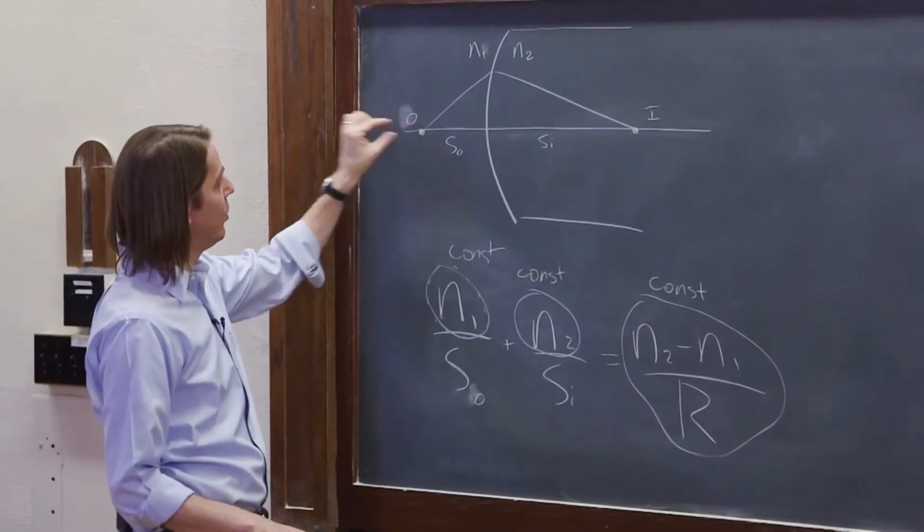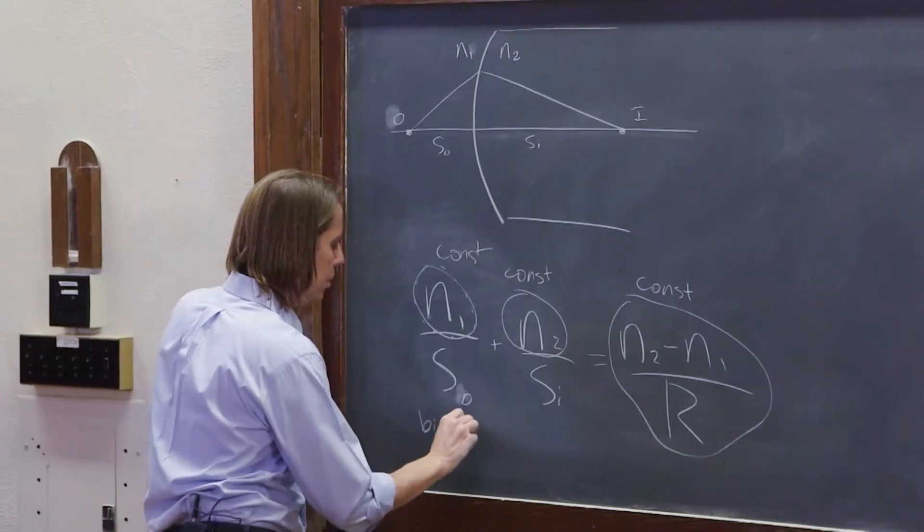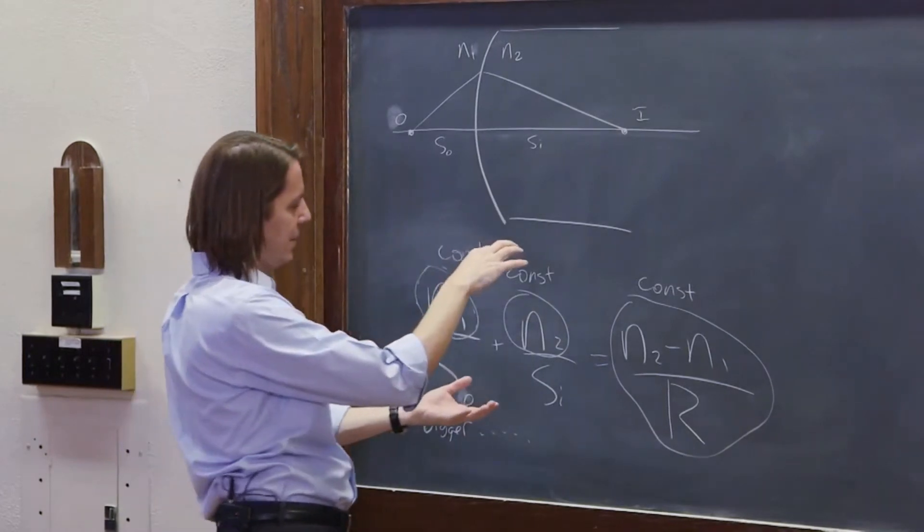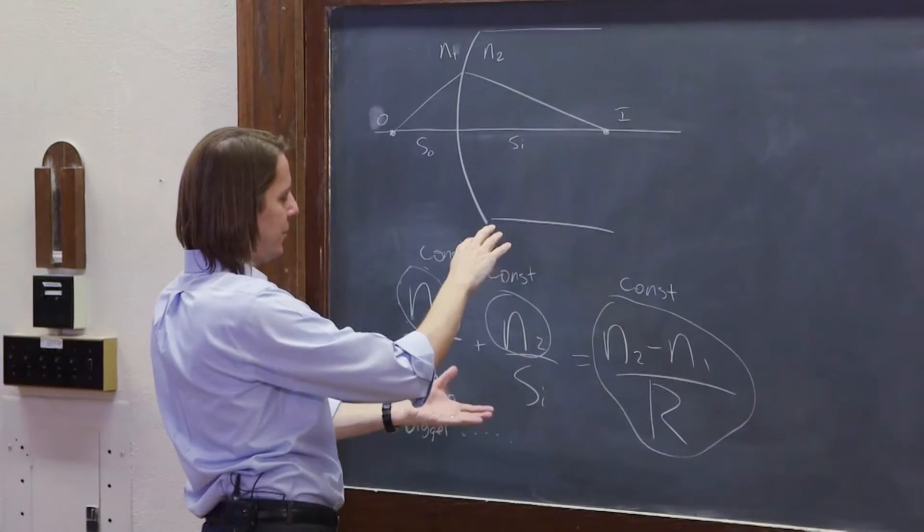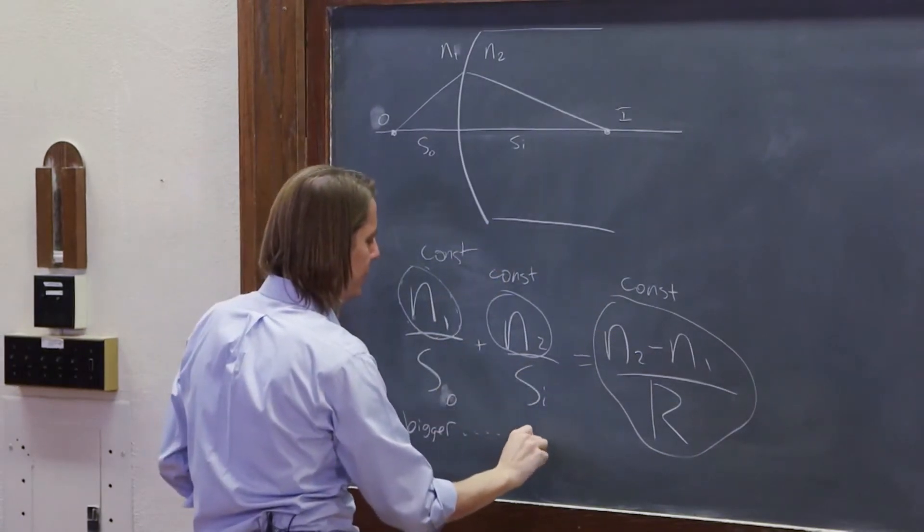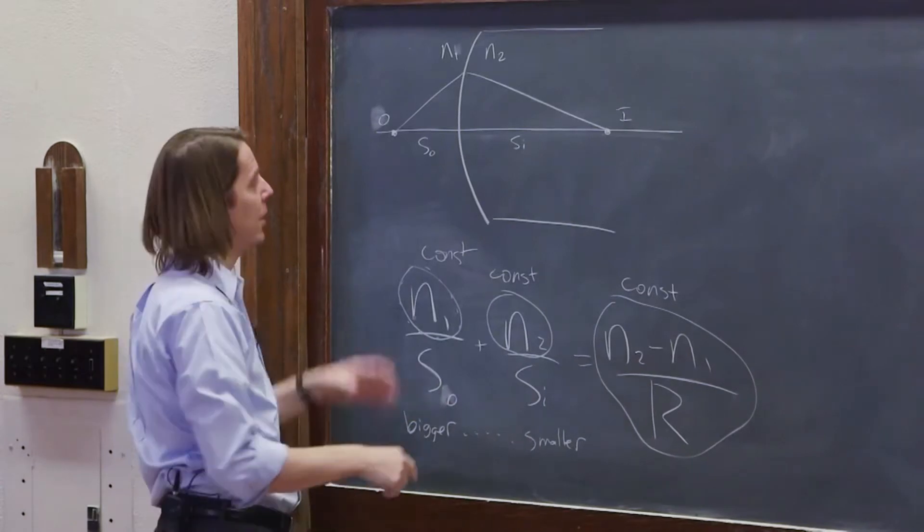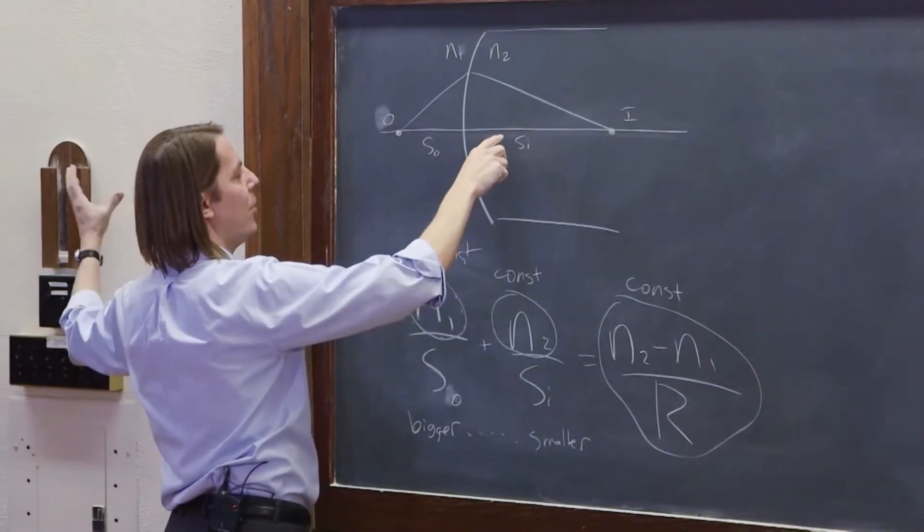If I were to pull this back and make the object distance bigger, what would happen? Well, if this gets bigger, this term would get smaller, and if this term gets smaller and this stays constant, this term has to get bigger. How does this term get bigger? Si has to be smaller. The image distance would have to be smaller. So if I pull this back, then the image distance is going to get smaller and pull back.